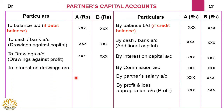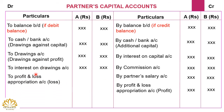Next is interest on drawings. A and B withdraw cash for personal use from the partnership firm, so in return they need to pay interest on drawings to the firm. Interest on drawings is debited to the partners capital account — A's interest on drawings is posted under A's column and B's under B's column. Next is the loss to be transferred from the profit and loss appropriation account. If there is a loss it is debited to the partners capital account, written as 'To Profit and Loss Appropriation Account.'